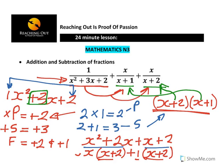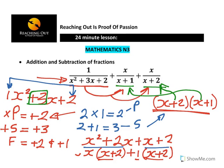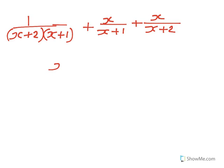In actual effect, the lowest common denominator will be (x plus 2)(x plus 1). So we rewrite the expression as 1 over (x plus 2)(x plus 1), plus x over (x plus 1), plus x over (x plus 2). The common denominator is (x plus 2)(x plus 1).